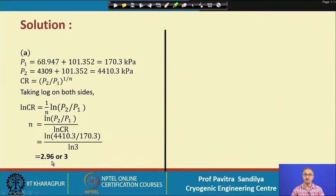Since we must take the next higher whole number, we conclude that 3 stages are needed to carry out this particular compression.